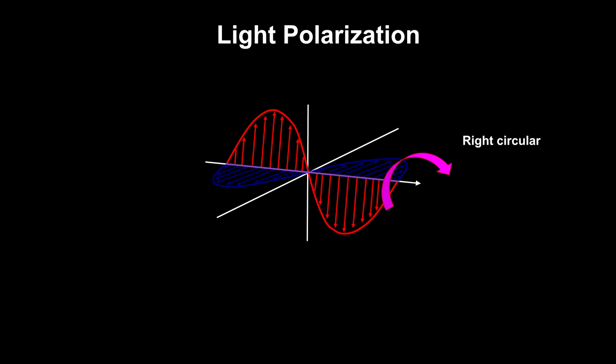It is also possible for the polarity to be rotating clockwise or counterclockwise around the line of motion. These properties hold for the basic unit of light, the photon.